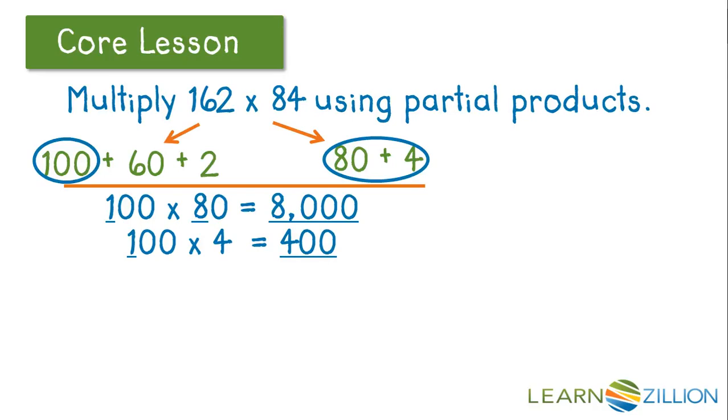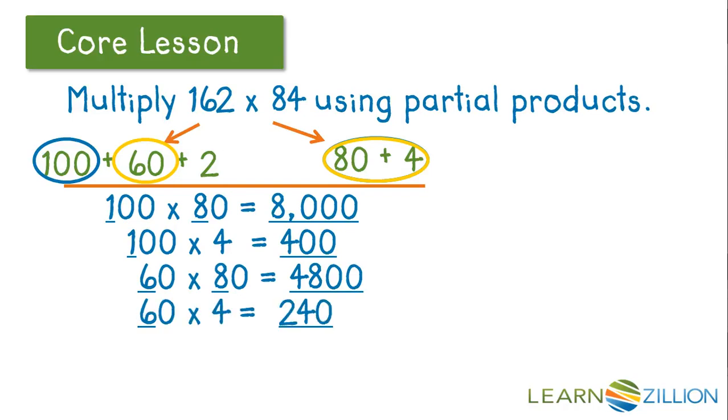And now we'll move to 60. We'll multiply 60 by 80 and 4. So we have 60 times 80 is 4,800 because 6 times 8 is 48 and we add in the two zeros. We then multiply 60 times 4 to get 240.